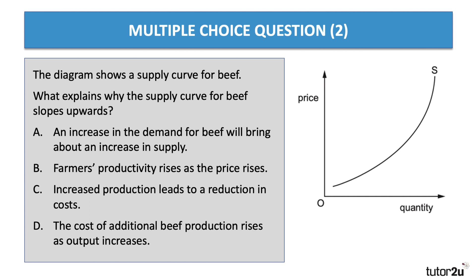Why is there a more inelastic supply curve at higher levels of output? The answer is that the marginal cost of additional beef production is going up. As you increase your production, it may well be the case that the extra costs associated with getting the extra beef to market is going up, and therefore that's the main reason for the upward sloping supply curve.